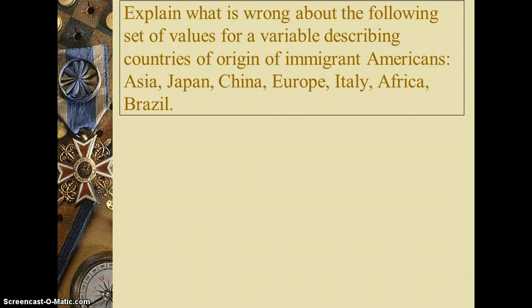What is wrong about the following set of values for a variable describing countries of origin of immigrant Americans? The options are: Asia, Japan, China, Europe, Italy, Africa, or Brazil. Imagine this is a question on a survey asking immigrant Americans to tell us their country of origin, and these are the potential answers.